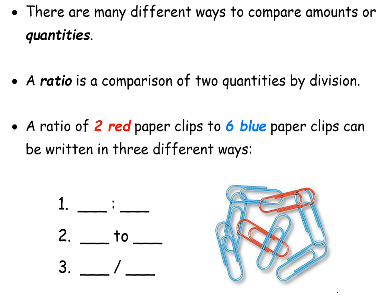So let's talk about quantities and ratios. When we talk about things or items, there are many different ways to compare quantities. A quantity means an amount of something. So a ratio is one way to compare those quantities. A ratio is a comparison of two quantities, and the way that we do that is by using division.